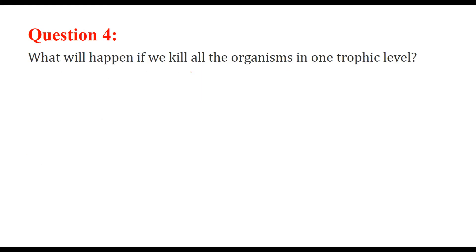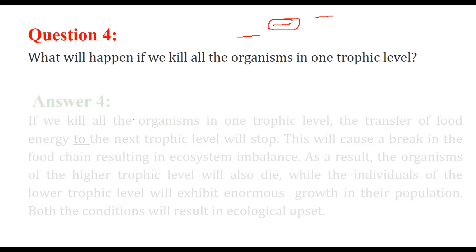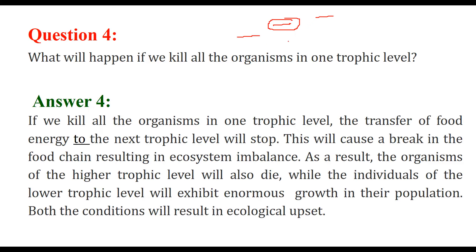What will happen if we kill all the organisms in one trophic level? A food chain is formed across different trophic levels. If one level is killed or vanished, the transfer of food or energy to the next trophic level will stop. There will be a break in the food chain, and that will cause ecosystem imbalance.